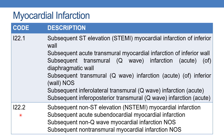The next code is I22.2 — subsequent non-ST elevation myocardial infarction, or subsequent acute subendocardial myocardial infarction, or subsequent non-Q-wave myocardial infarction, or subsequent non-transmural myocardial infarction. For any of these terms, code I22.2.